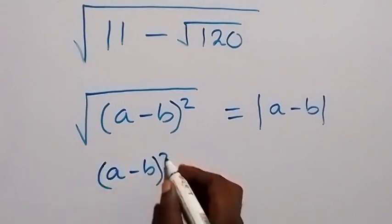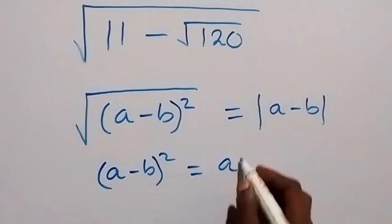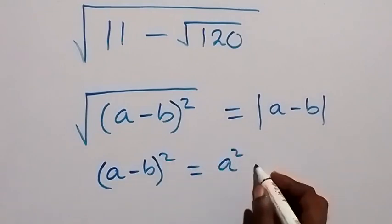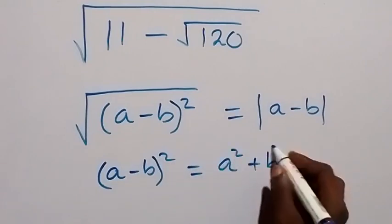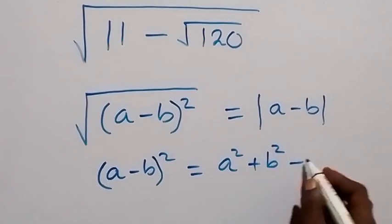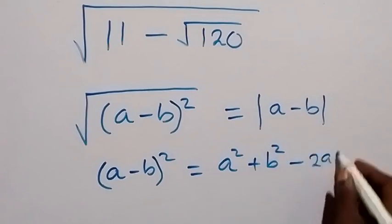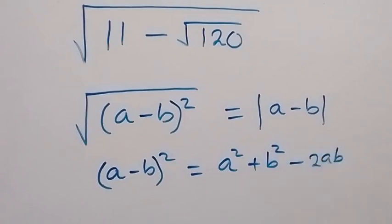(a minus b) squared is the same thing as a squared plus b squared minus 2ab. Once we can write √(11 minus √120) in this form, we will be able to conclude the answer.